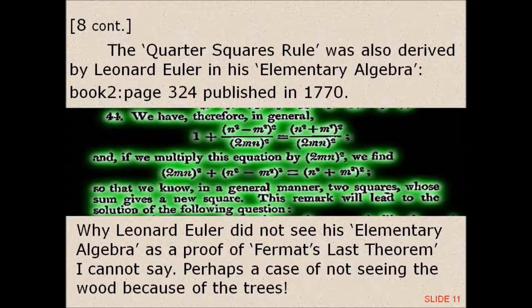Page 324, published in 1770. Why Leonard Euler did not see his elementary algebra as a proof of Fermat's Last Theorem, I cannot say.